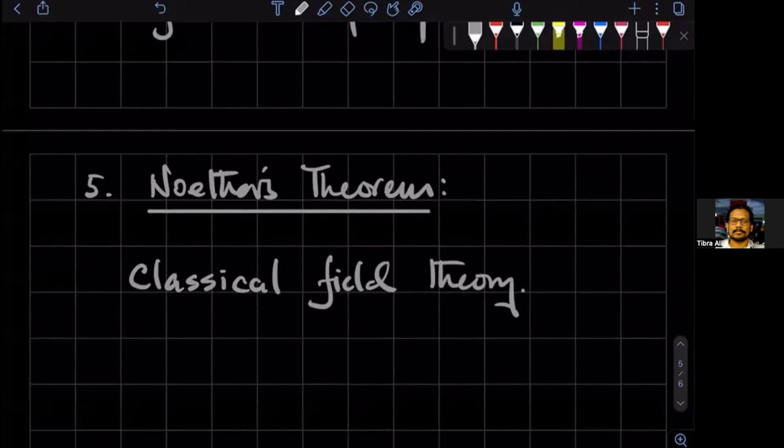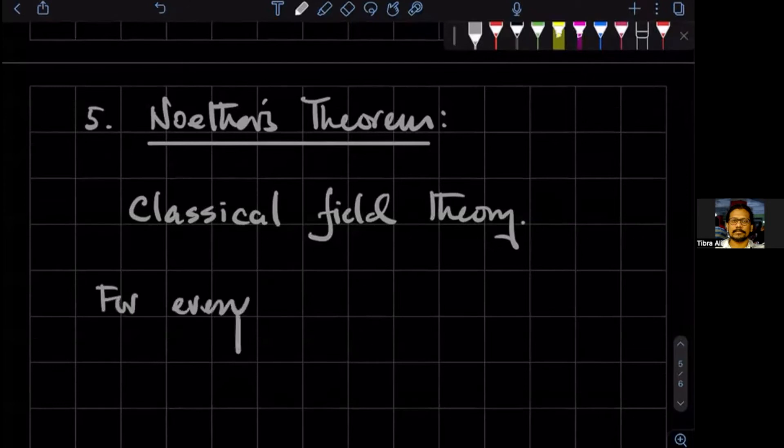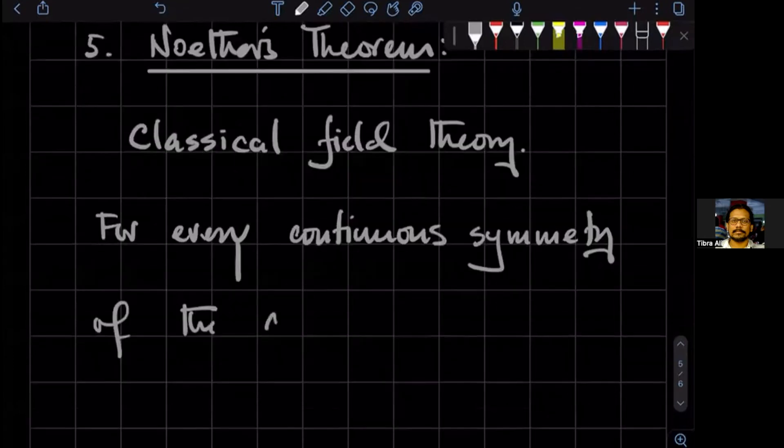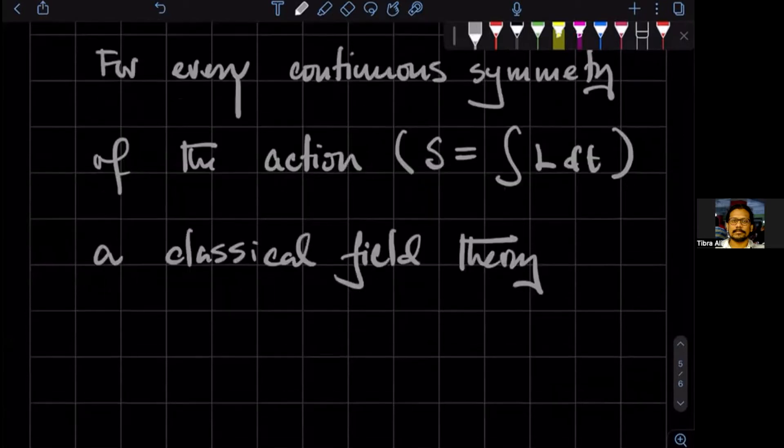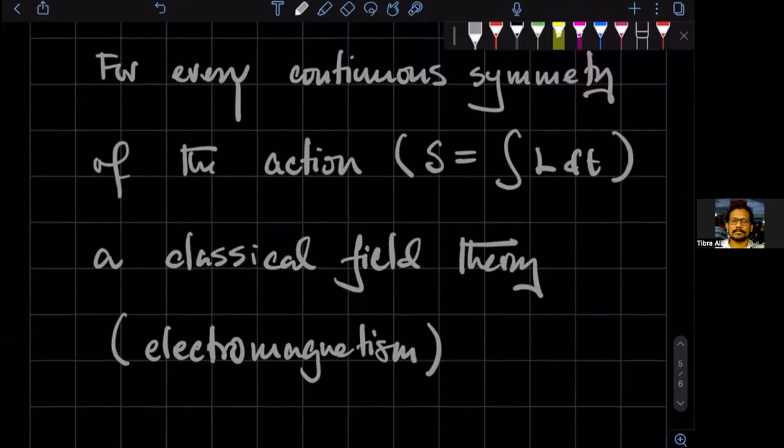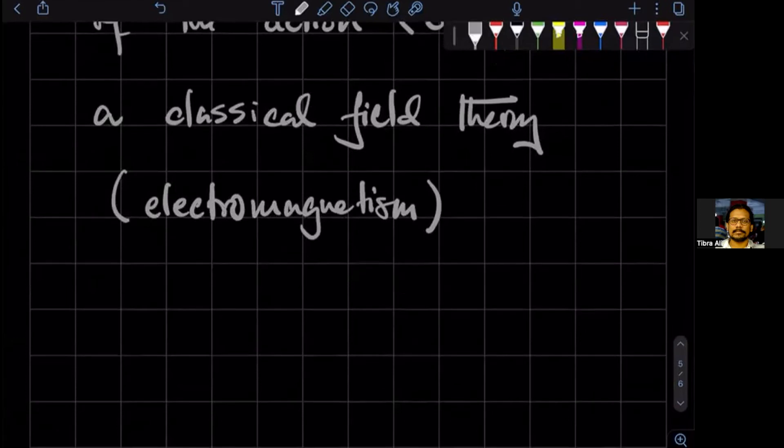And what she showed was that for every continuous symmetry, for every continuous symmetry of the action of a classical field theory, think about electromagnetism, electromagnetic field. So for every continuous symmetry of the action of a classical field theory, there exists a conserved charge.